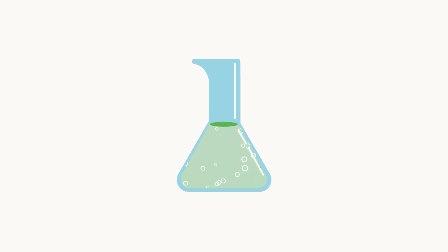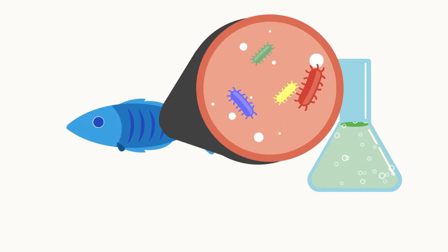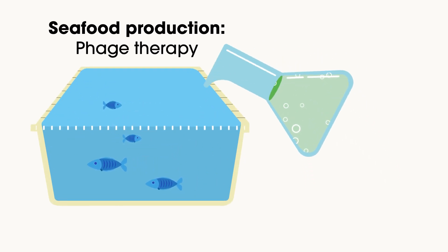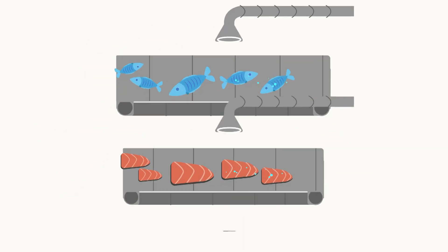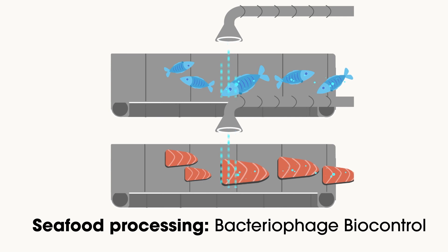Effective phage cocktails could be applied at different stages of the seafood chain to prevent the occurrence and growth of non-desired target bacteria. In aquatic environments, as an alternative to antibiotics, to control infections during seafood production. And in food products and food processing environments during seafood processing.